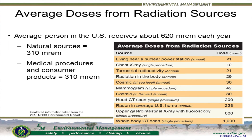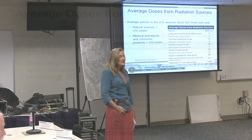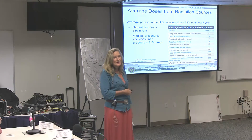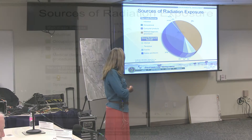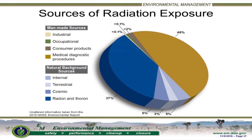Of course, 310 is an average — it depends on where you live. The pie chart shows that the nuclear industry is a very small slice. And something a lot of people don't know: coal burning has historically released more radioactive emissions than nuclear power plants, though they're getting cleaner.